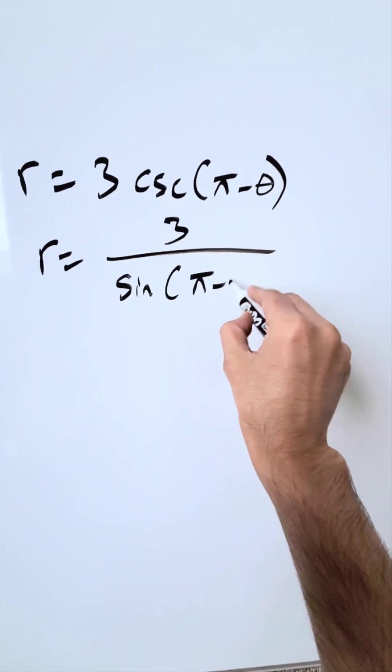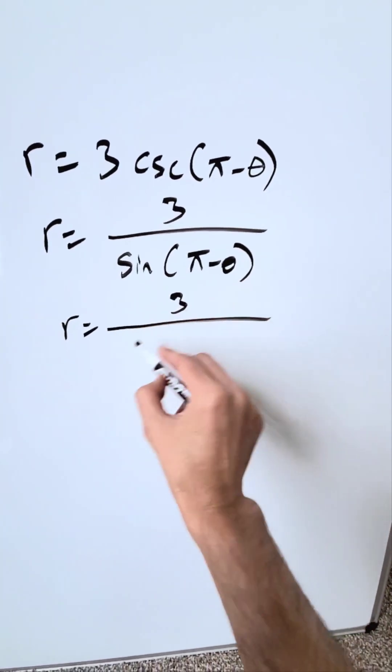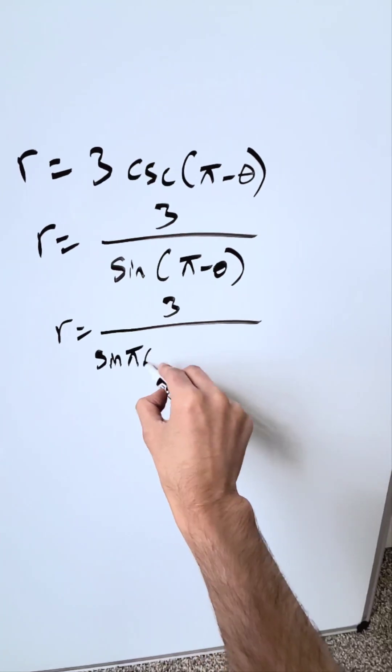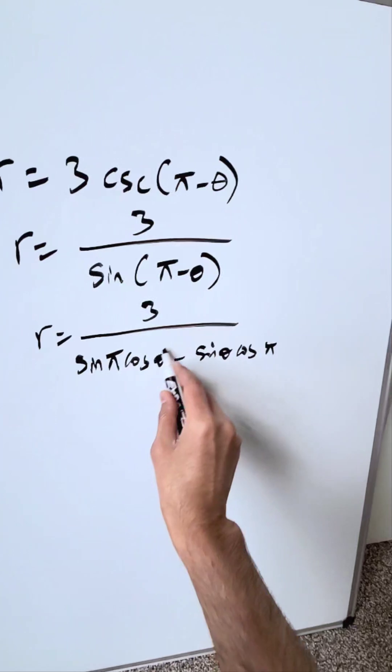the reciprocal function sine of (pi minus theta) here in the denominator. What we will do is bring in the sine difference formula. I will have sine pi cosine theta minus sine theta cosine pi. Sine of pi is